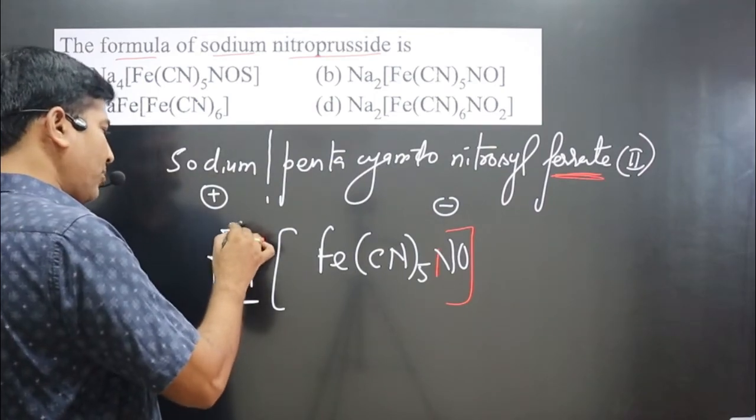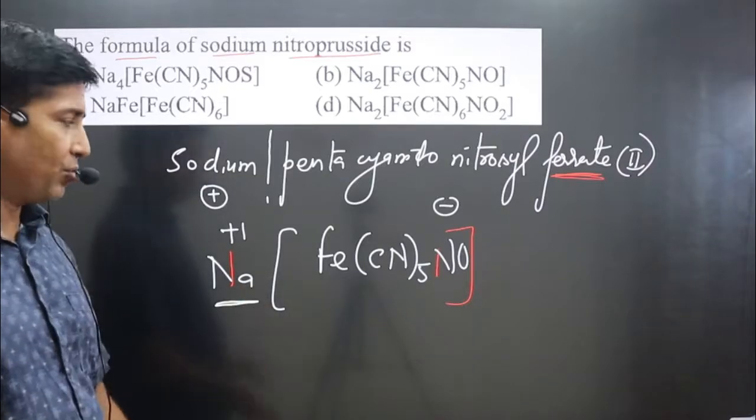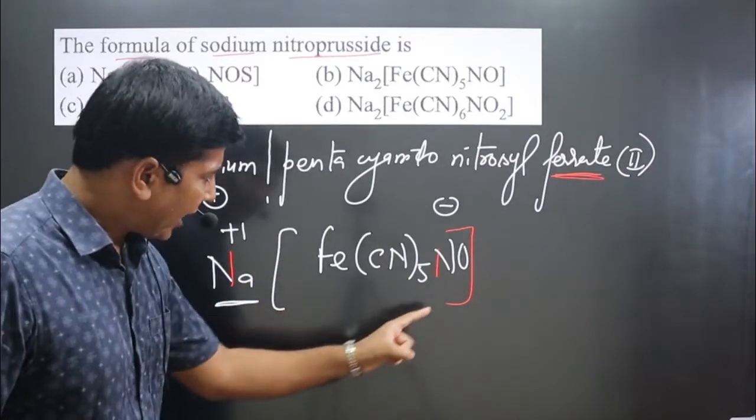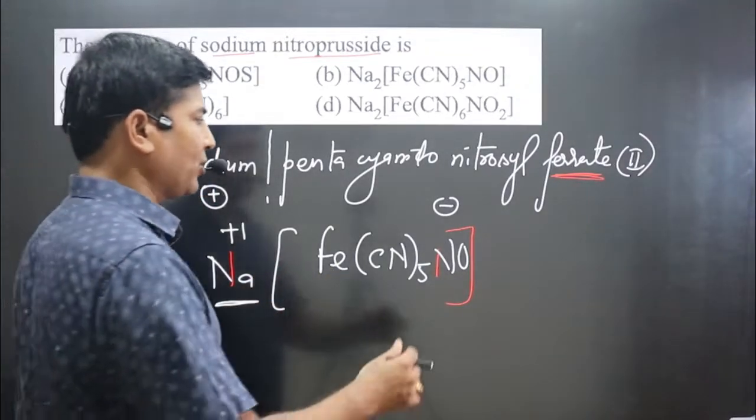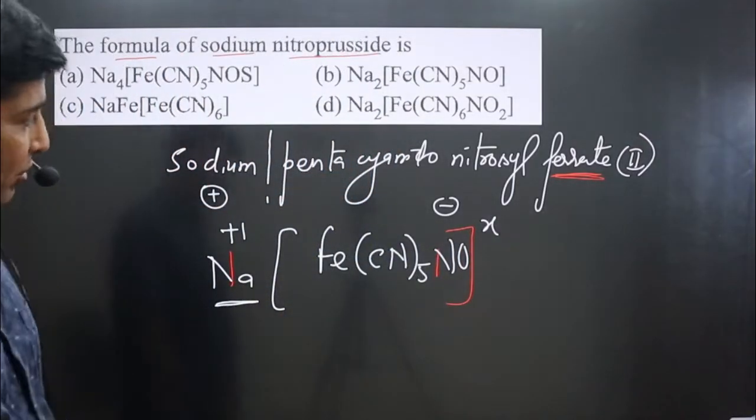Pay attention very carefully. For the sodium, we know it is having plus one charge, always present in any compound will show plus one charge. But this anionic portion, I do not know the charge. So I assume it is X is there, it is X. Now pay attention carefully.